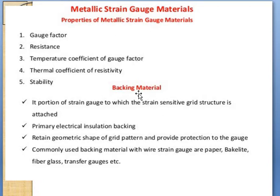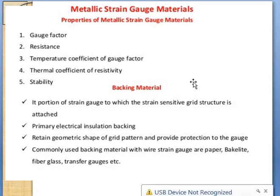The backing material is the portion of the strain gauge to which the strain-sensitive grid structure is attached. We need to attach the wire or foil to a carrier or backup. The backing provides primary electrical insulation and retains the geometric shape of the grid pattern, giving protection to the gauge. Commonly used backing materials include paper, bakelite, fiberglass, and transfer gauges.